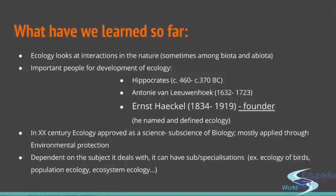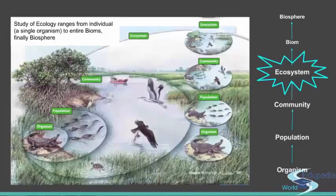Then we said that ecology actually developed in the way we know it today only in the 20th century. Today it's mostly recognized through environmental protection practice. We also mentioned that depending on the object of the research, there are different branches of ecology — so you have ecology of birds, ecosystems, and so on. But then you also have other divisions of ecology dependent on its objectives, and this is what we're going to talk about today.